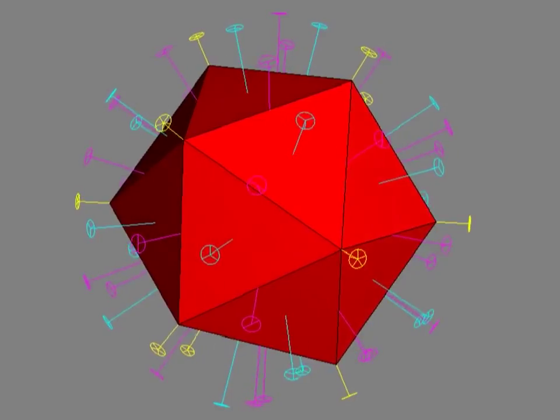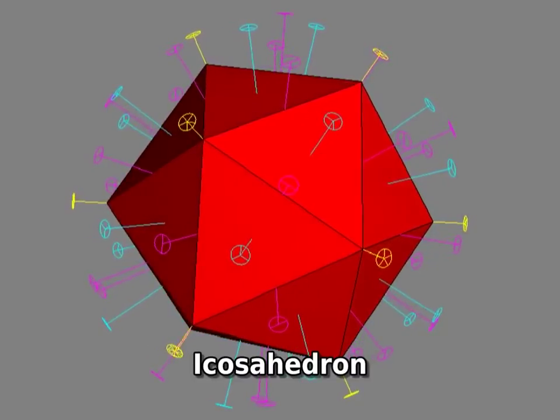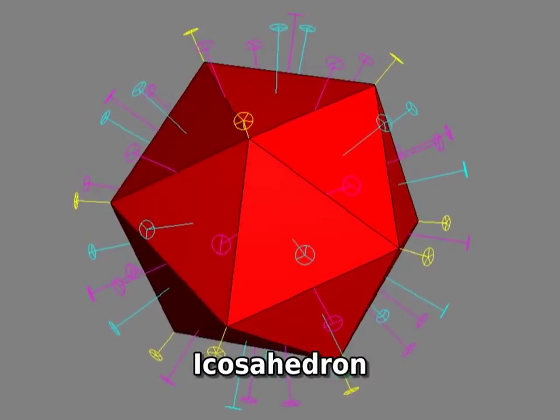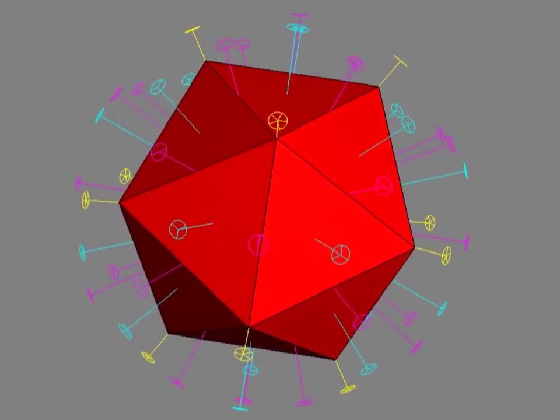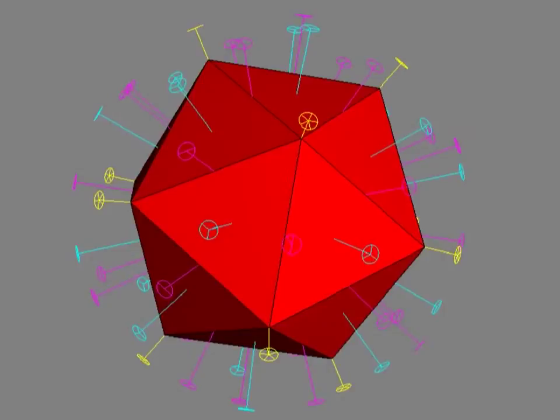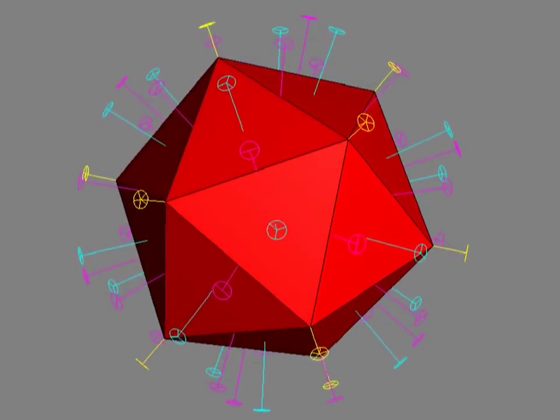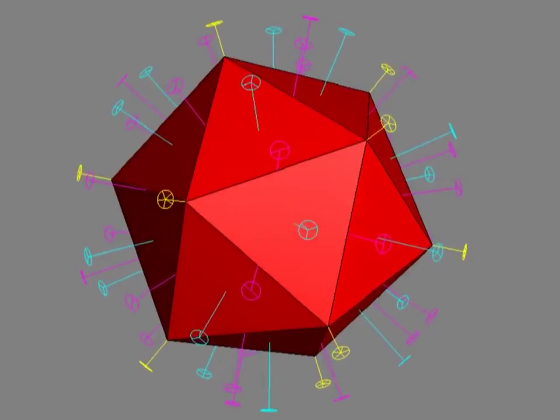The Spaghetti Code sculpture has icosahedral symmetry. That means it has the same rotational axes as an icosahedron. If you rotate an icosahedron 72 degrees, that's 360 over 5, about a line that connects opposite vertices, it appears unchanged. There are 6 of these 5-fold axes.